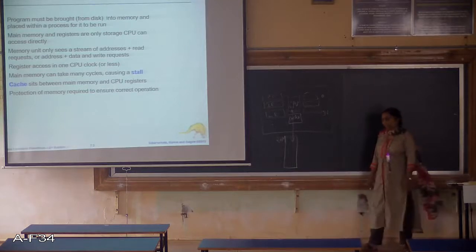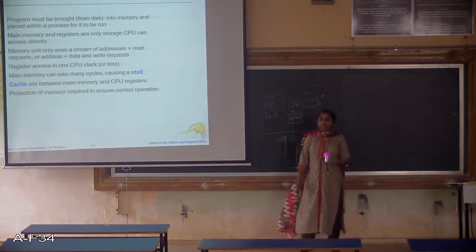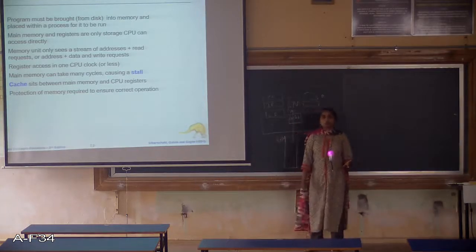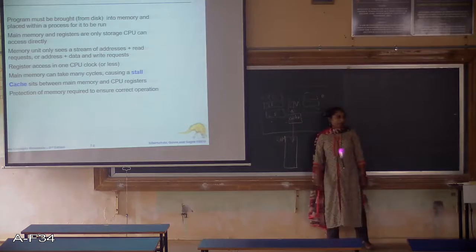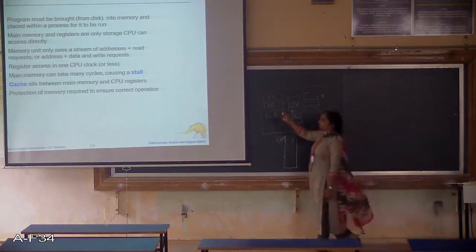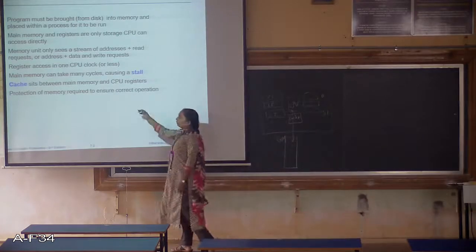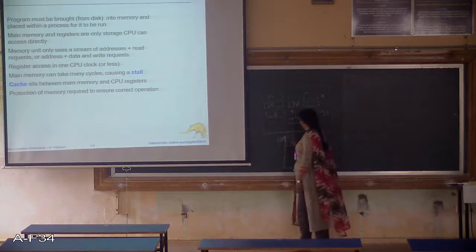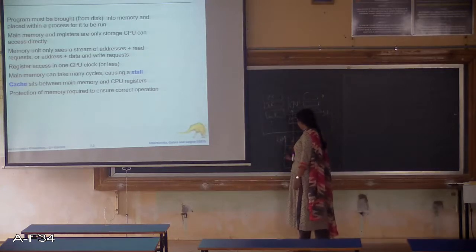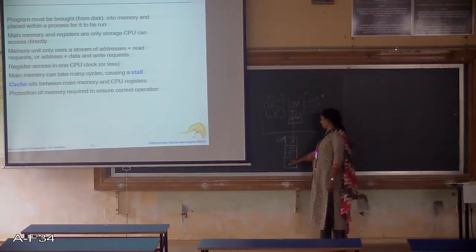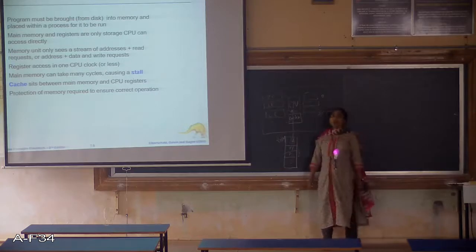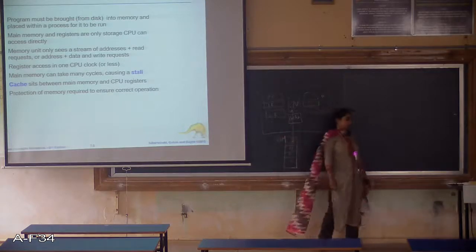In a system you will have various levels of cache — L1 cache, L2 cache, and so on. You can study those in detail by yourself as it is beyond the scope of this syllabus. Cache sits between the main memory and the CPU registers. You need to take care of protection: in RAM you will have the OS, then processes P1, P2, and so on. If P2's instructions are getting executed, you should ensure that P2 does not access any other memory location — only the part allocated to it. That is the task of the operating system and the main memory management technique.